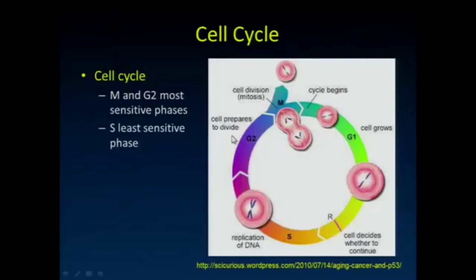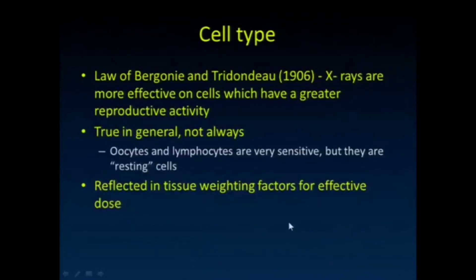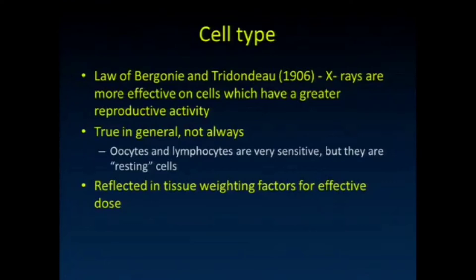This diagram shows those phases of the cell cycle where the cell prepares to divide and division is underway — those are very sensitive — and this quiescent S phase is less sensitive. Although it is generally true that cells with greater reproductive activity are more sensitive, it's not always true. For instance, lymphocytes and oocytes are very radiation sensitive, but these are resting cells, so there's certainly more to the story than just how often cells are replicating.